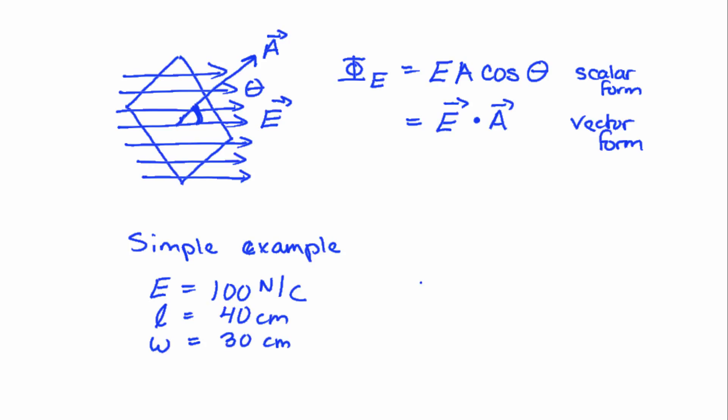So since we're dealing with a rectangular sheet, the area is going to be length times width. If I plug my numbers in, I'll get 1200 centimeters squared. I'm going to want to convert this to meters. Since it's centimeters squared, I need to do my conversion factor twice. So that's 1 meter over 100 centimeters squared.